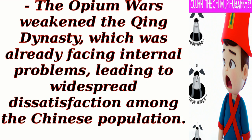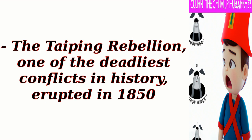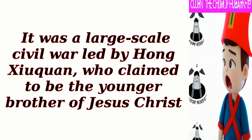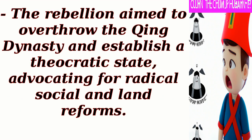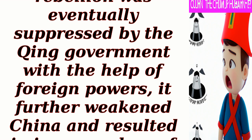The Opium Wars weakened the Qing dynasty, which was already facing internal problems, leading to widespread dissatisfaction among the Chinese population. The Taiping Rebellion, one of the deadliest conflicts in history, erupted in 1850. It was a large-scale civil war led by Hong Xiuquan, who claimed to be the younger brother of Jesus Christ. The rebellion aimed to overthrow the Qing dynasty and establish a theocratic state, advocating for radical social and land reforms. Although the rebellion was eventually suppressed by the Qing government with the help of foreign powers, it further weakened China and resulted in immense loss of life and destruction.